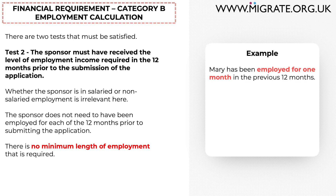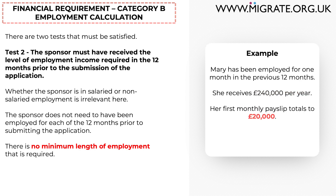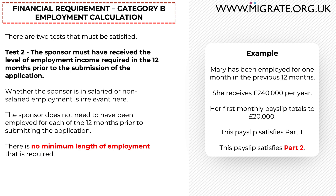For example, Mary has been employed for only one month in the previous 12 months. She receives £240,000 a year as a surgeon, and her first monthly payslip totals £20,000. This payslip satisfies part 1 of the two-part test, because it shows she has a gross annual salary of £240,000 when the application is submitted. And this payslip also satisfies part 2 of the two-part test, because it shows that her £20,000 is higher than the minimum income threshold of £18,600 which applies to her application.